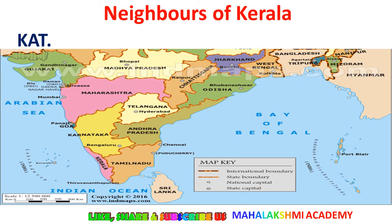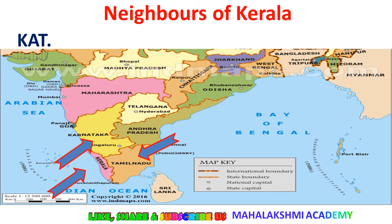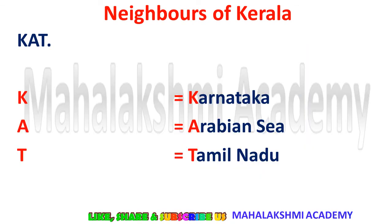Now let's check it out on the map. Karnataka is there, Arabian Sea — A is for Arabian Sea — and the last one is Tamil Nadu. These are the regions sharing boundaries with Kerala.